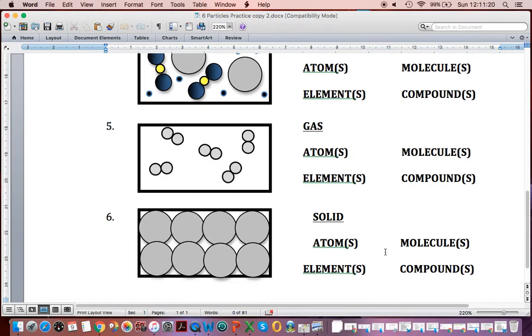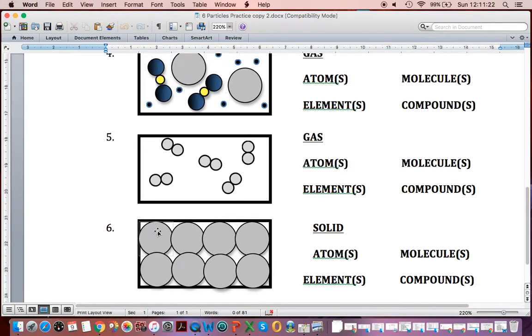Now the last one says solid. And so from this, technically, we can't tell for atoms or molecules. But we're going to circle atoms because we know solid the atoms are locked together in this case. And because they're all identical, we know for sure that we're looking at elements.